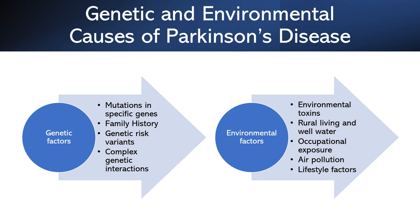Now let's look at environmental factors. Exposure to certain environmental toxins, such as pesticides, herbicides, industrial chemicals, heavy metals, and other environmental pollutants, can increase the risk. Exposure may occur through various routes such as inhalation, ingestion, or skin contact. Some studies have suggested that living in rural areas or consuming well water may increase the risk of Parkinson's disease, as well water may be contaminated with pesticides, nitrates, and other chemicals.